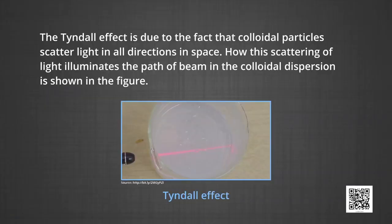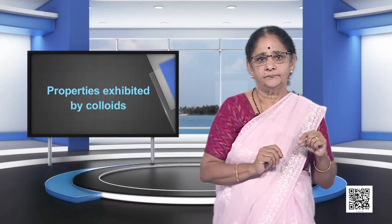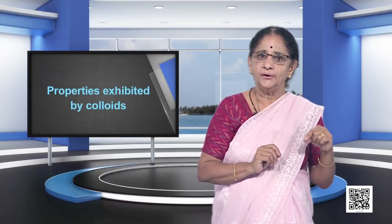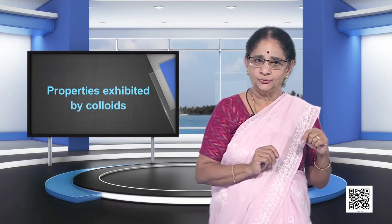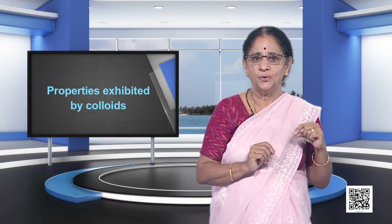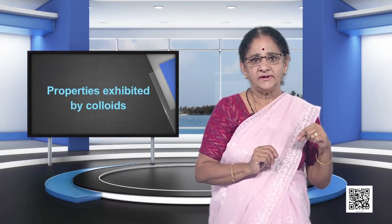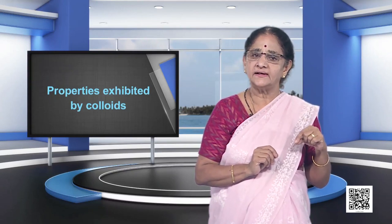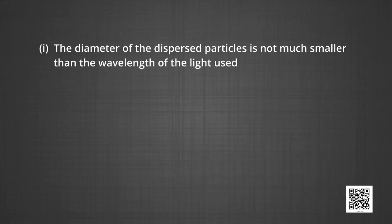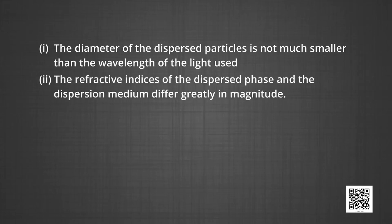This effect was first observed by Faraday and later studied in detail by Tyndall and is termed the Tyndall effect. The Tyndall effect is due to the fact that colloidal particles scatter light in all directions in space. Tyndall effect can be observed during the projection of pictures in a cinema hall due to scattering of light by dust and smoke particles. Tyndall effect is observed only when: the diameter of the dispersed particles is not much smaller than the wavelength of the light used, and the refractive indices of the dispersed phase and the dispersion medium differ greatly in magnitude.